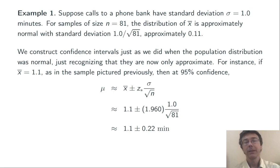Simplifying this down a little bit, we get that the population mean mu is going to be about 1.1 plus or minus 0.22 minutes with 95% confidence.